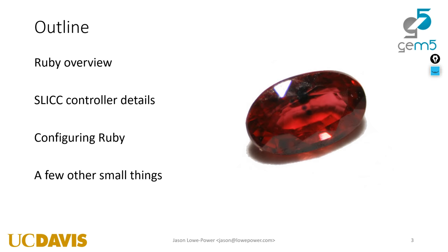I'm going to talk a little bit about Ruby — an overview of Ruby. We're going to dive into a little bit of detail on the SLICC controller and how to make these state machines. I'll also talk about how to configure Ruby, because that's a little bit different than configuring everything else, and a few other small things.